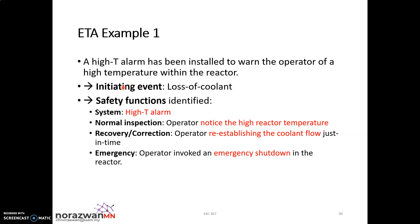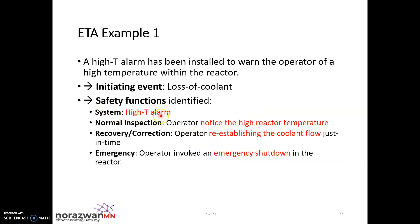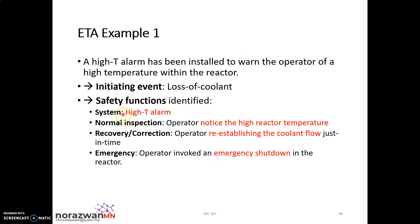After you have your initiating event, you need to identify your safety functions. The first obvious safety function is your high temperature alarm system. The second safety function involves the operator — the operator will notice the high reactor temperature by looking at the reading or at the monitoring system.